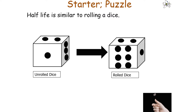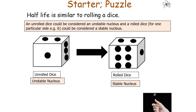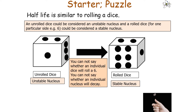Half-life is similar to rolling a dice. An un-rolled dice can be considered like an unstable nucleus, and a dice rolled to show one particular side — such as 6 — can be considered a stable nucleus. Just as you can't say whether an individual dice will roll a 6, you can't say whether an individual nucleus will decay.